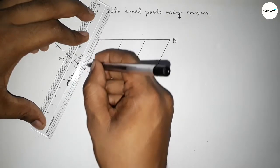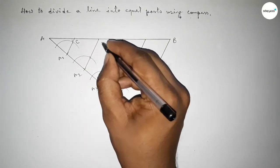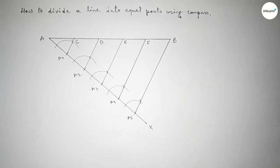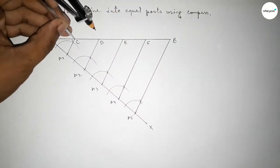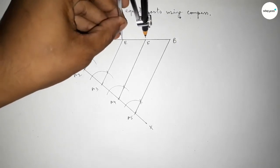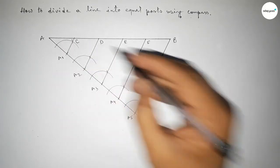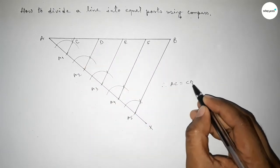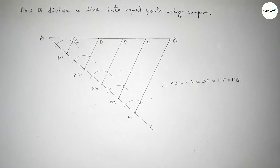Joining all lines parallel to A5B and taking here points C, D, E, and F. Now checking all the lengths — putting the compass and taking the first length: this side is equal, this side is equal, this side is also equal, and this side is approximately equal. By this way we can divide a line into equal parts for any number of parts. Here I used five parts, so lengths BC, CD, DE, EF, and FB are all equal. That's all, thanks for watching!